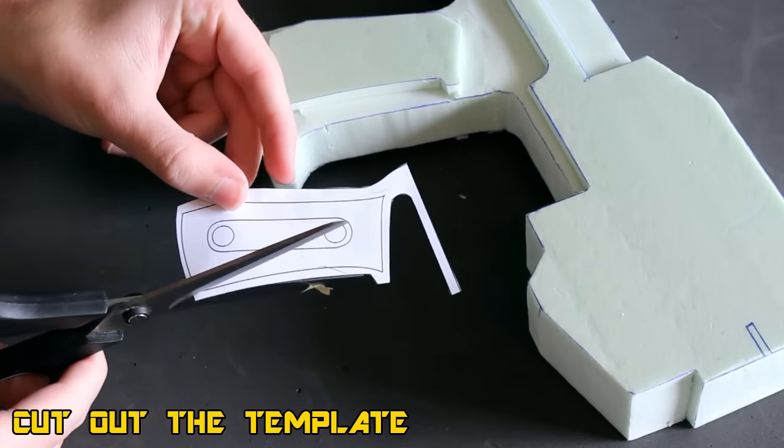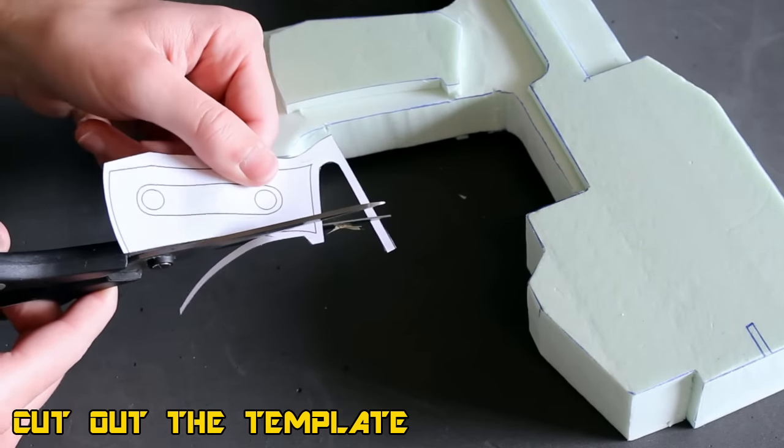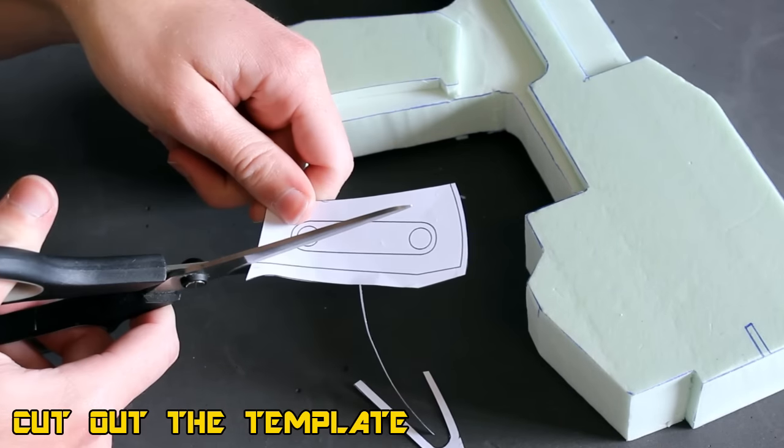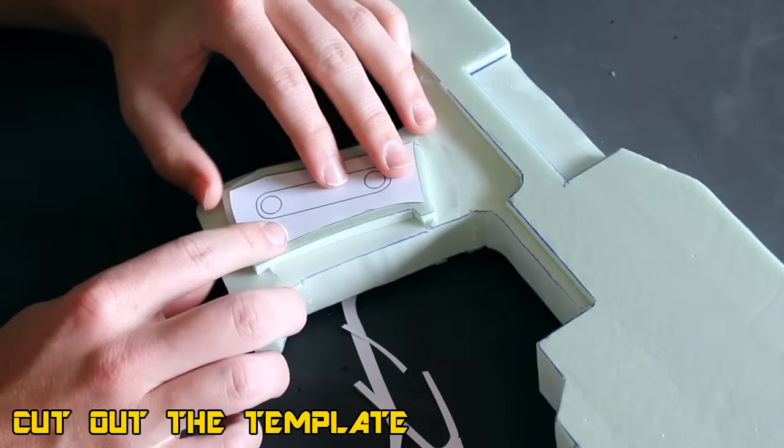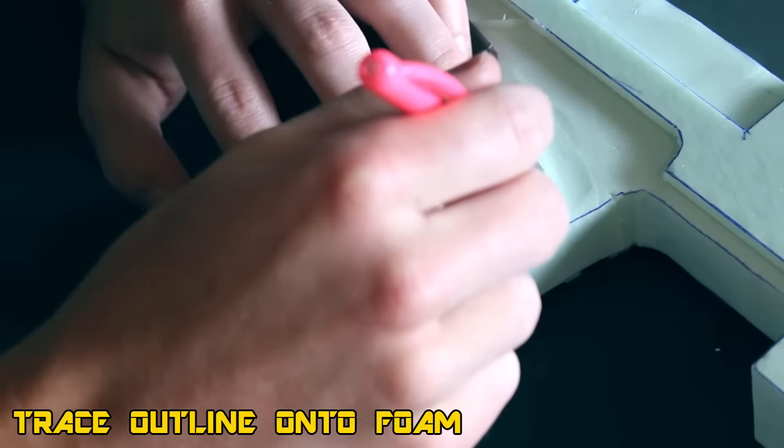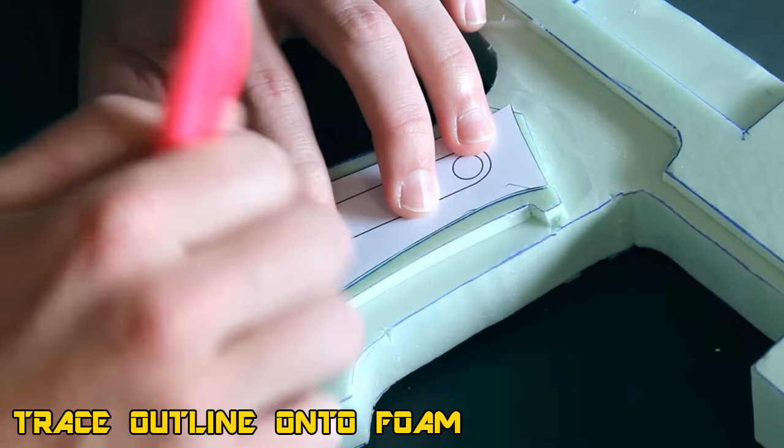Now we're going to go more detailed into this grip. On the template you should see these little lines that I'm cutting out now which are more on the inner side. We're going to cut those and trim them out and then carefully place it back on the grip, nicely centered, and then trace around it.